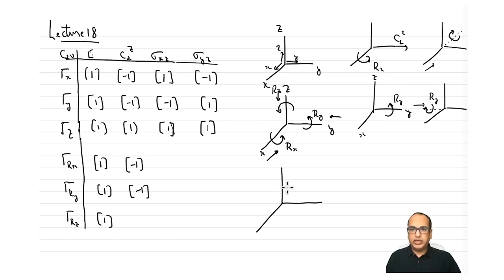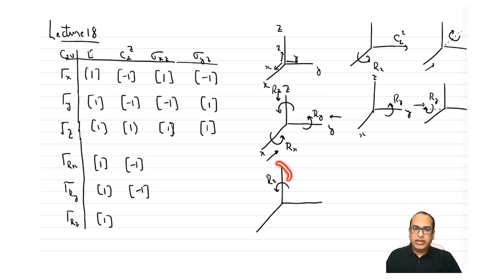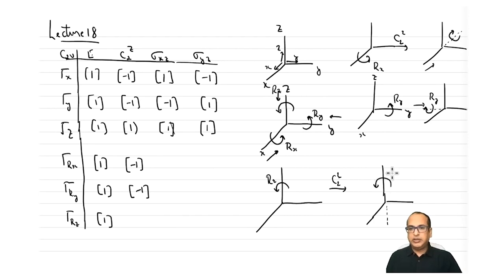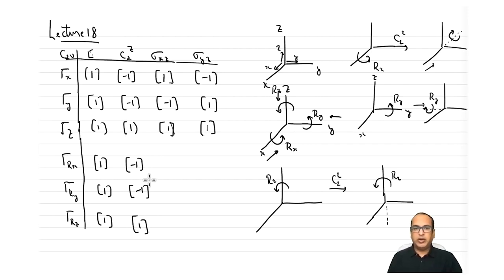For Rz under C2z: Rz is the anticlockwise sense of rotation of the z-axis, viewed from the top. After applying C2z, since this axis is collinear with the z-axis, there is no change — Rz remains as Rz, so the character is +1.